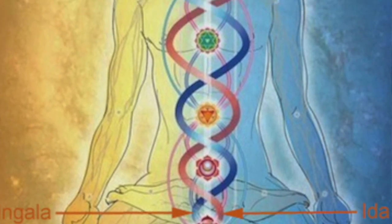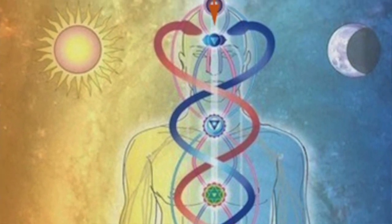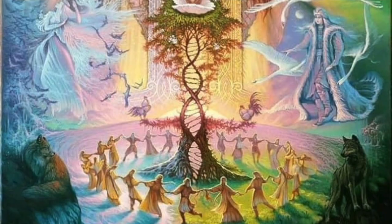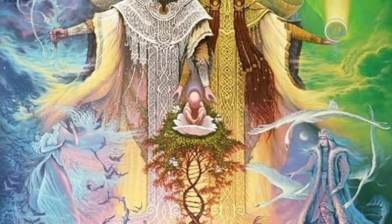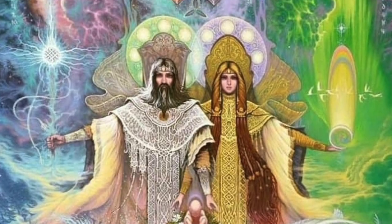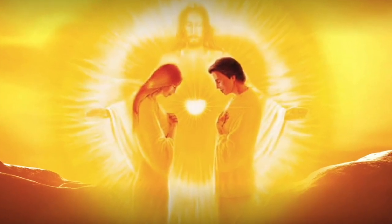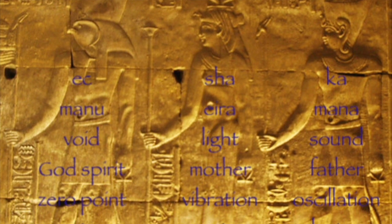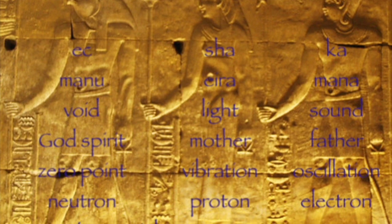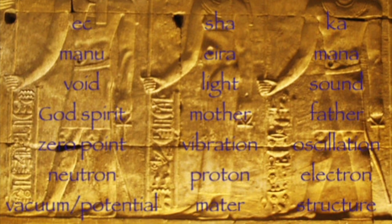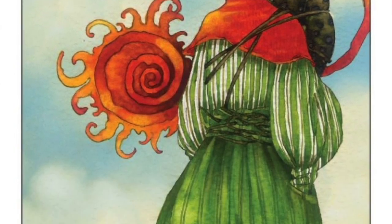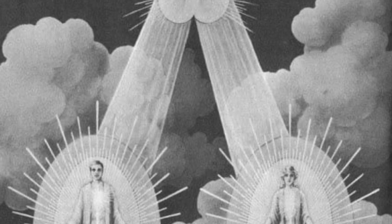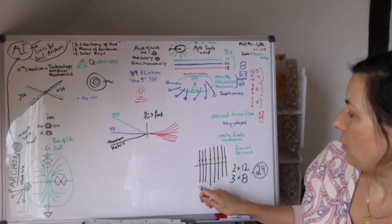And that correlates to the Ida, Pingala, and Shushumna. And that is also, you can say, father, mother, and child. The Fool Child in the Tarot is the zero, is the neutral. So we have clusters of threes in the timelines.